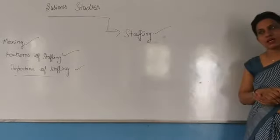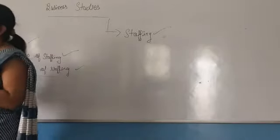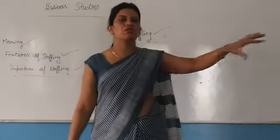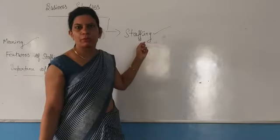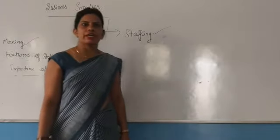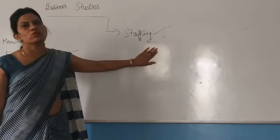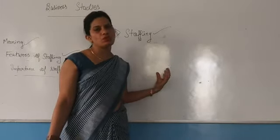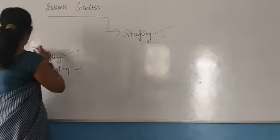Our third function of management is staffing. What do we mean by staffing? In the second function, we identified the posts that should be filled by competent employees. Now, where are those employees? The employees will be appointed in the third function of management — this is called staffing. This appointment will be according to their eligibility, their qualifications, and their experience. There will be many steps to be followed in the process of staffing. So that was the meaning of staffing.